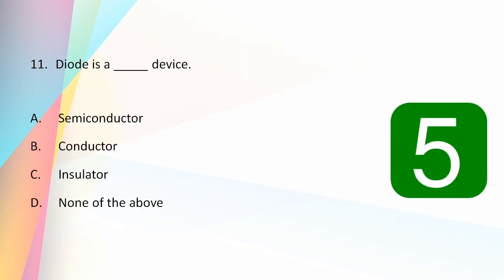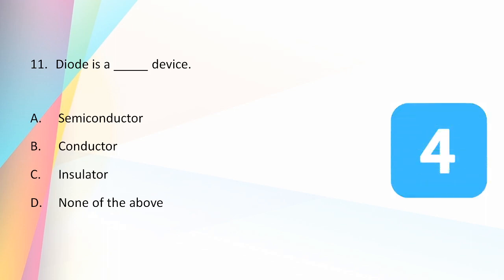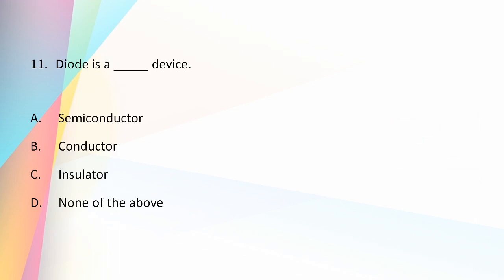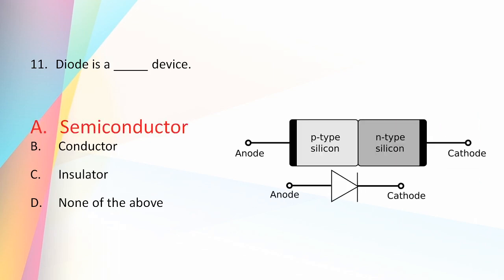A diode is a semiconductor device. It is one of the simplest semiconductor devices, which has the characteristic of allowing current in one direction and blocking it in the other direction across the full cycle of AC, acting like a rectifier.